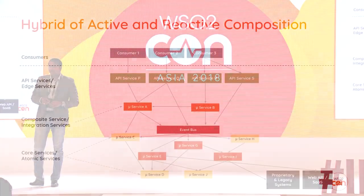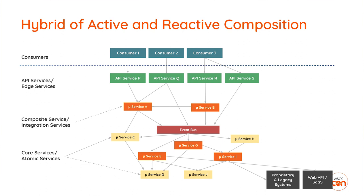When building a real application, you always need both synchronous and asynchronous functionality — it's not about one particular communication mechanism. We can come up with a hybrid architecture using both active and reactive composition. We have core microservices, composite microservices, and an event bus for asynchronous communication, with API microservices at the top layer to expose functionality to consumers.